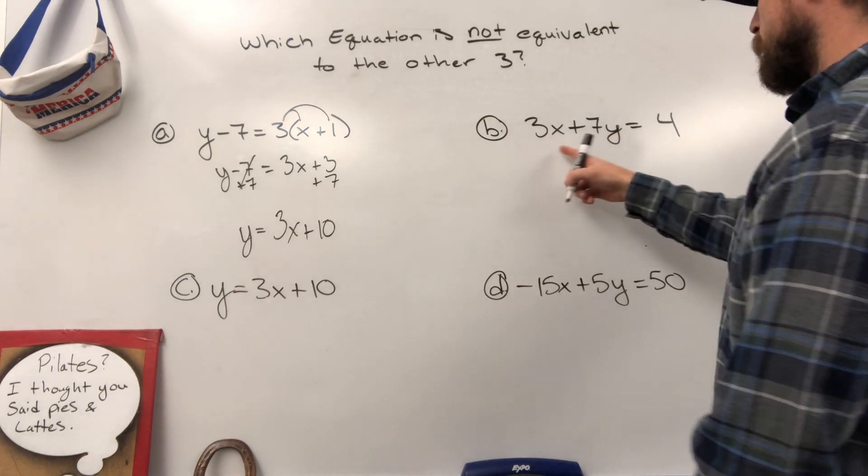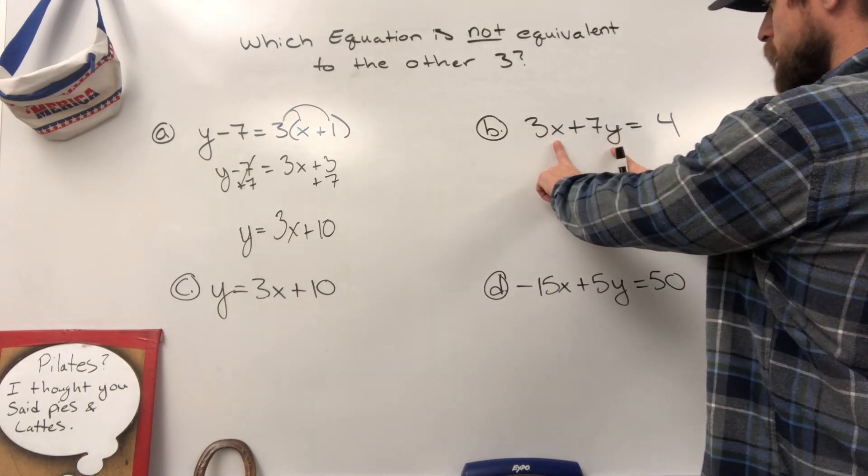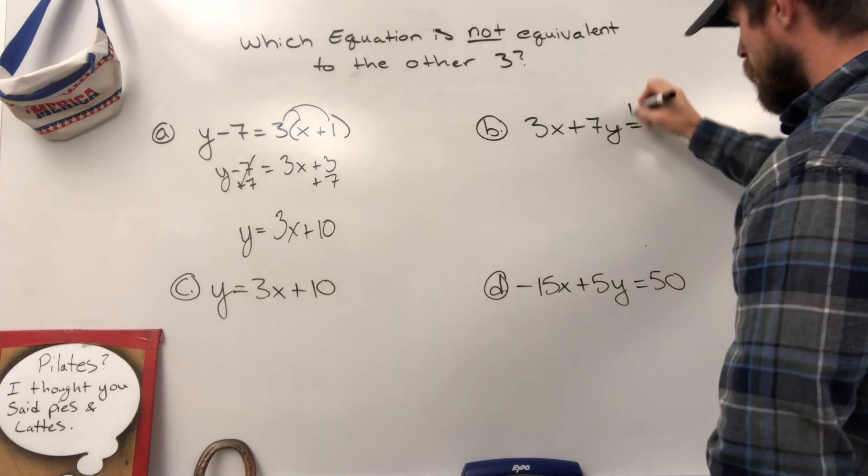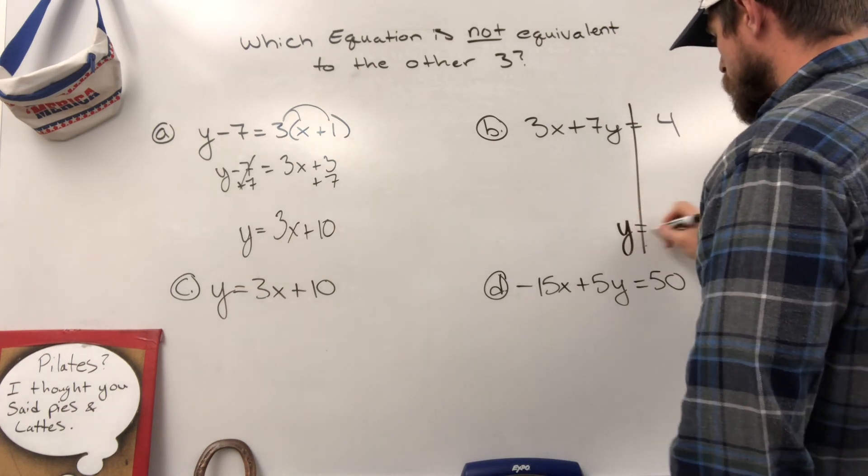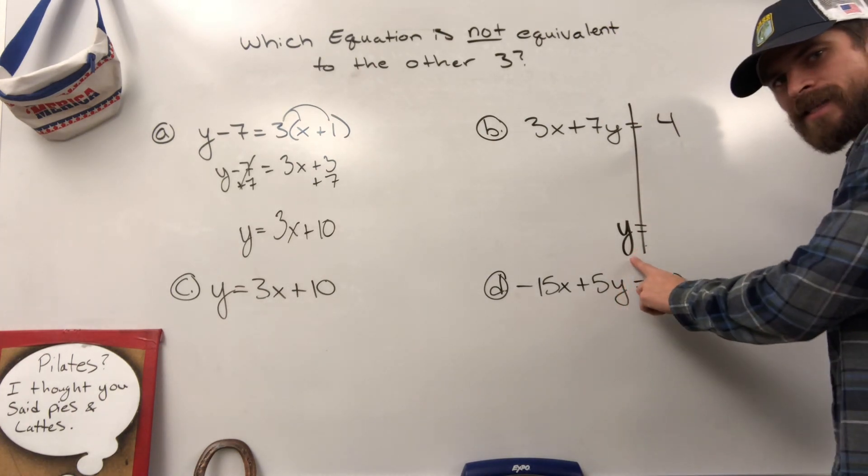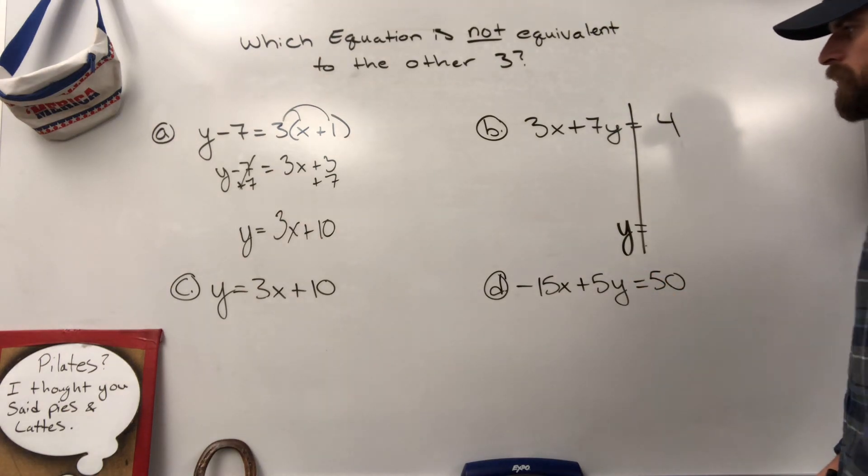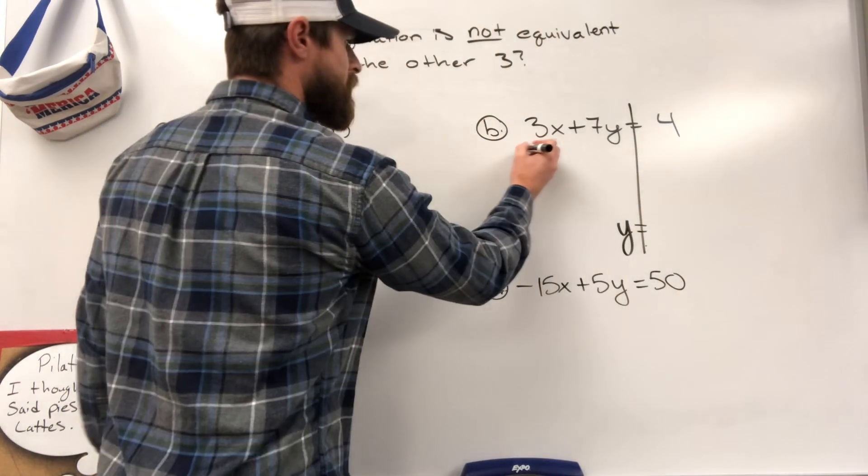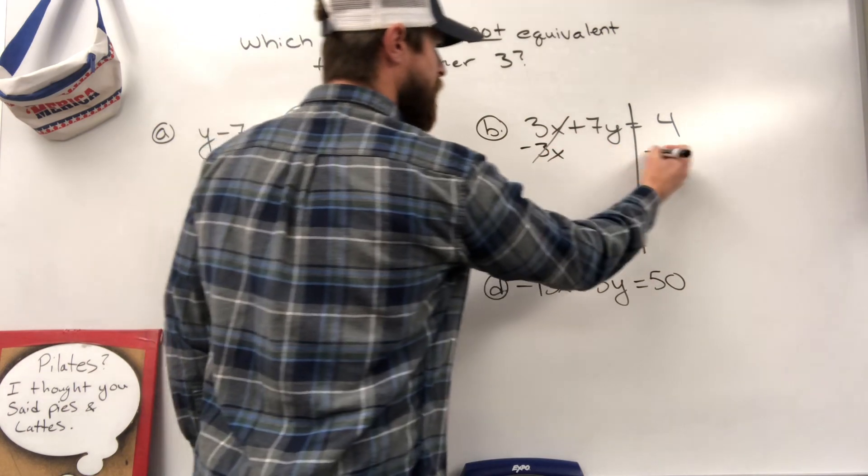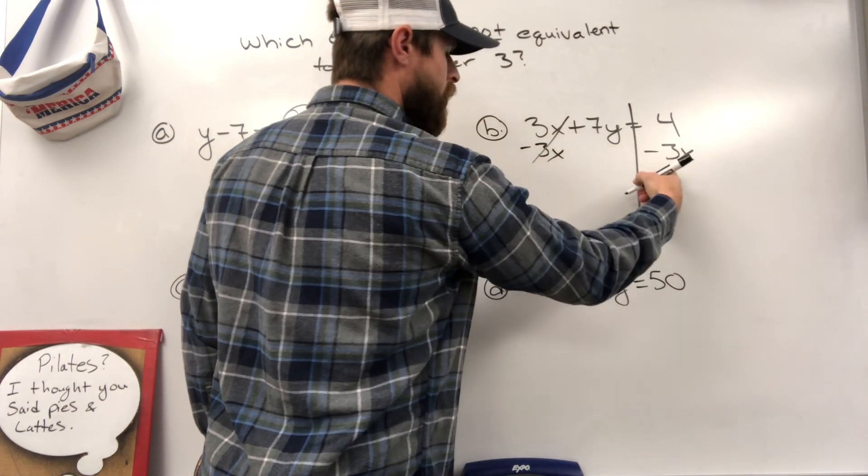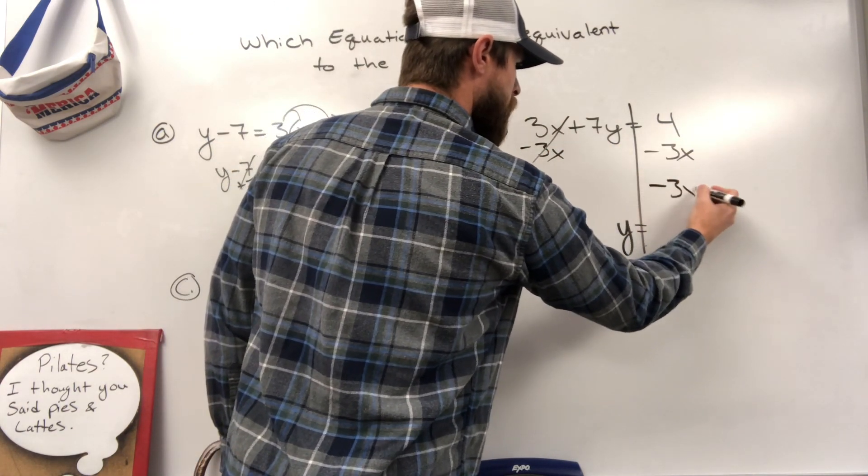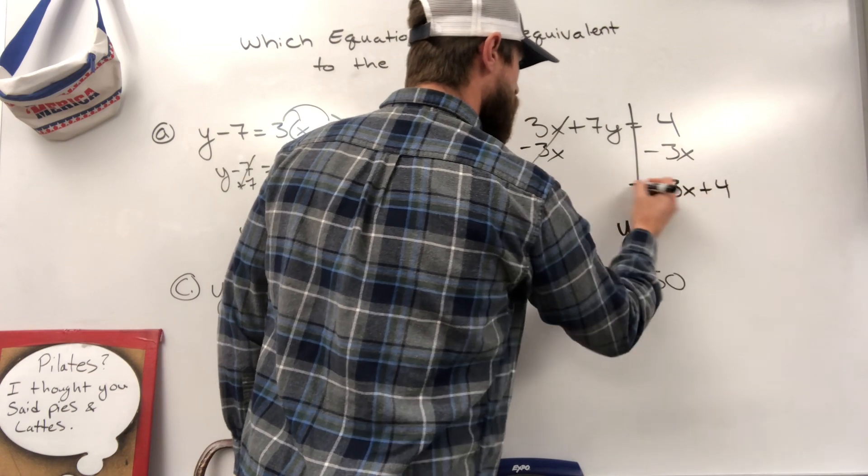We got standard form right here. That's x and y terms on the left side with a constant on the right. Our job is to get y alone on the left side, so isolate y. All right, we're going to do that by saying minus 3x cancels minus 3x. These are not like terms, so they do not go together. You just keep them separated as two different terms.